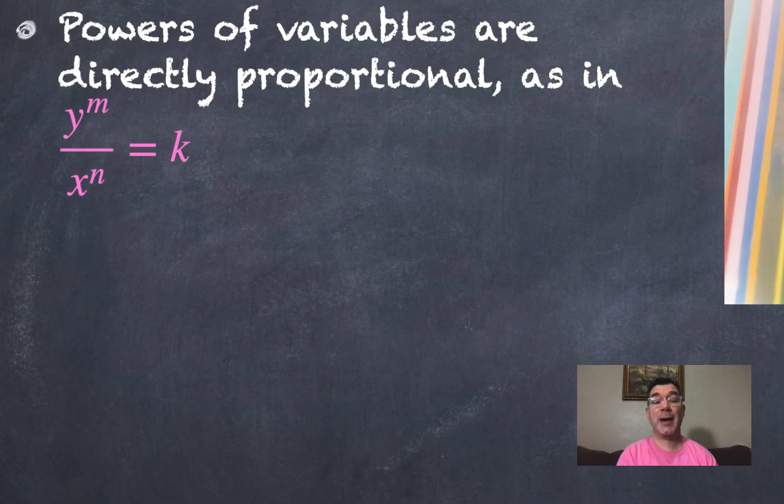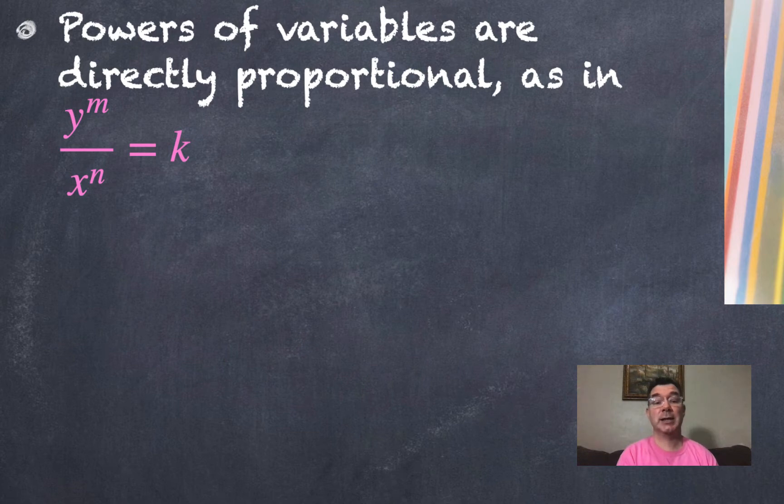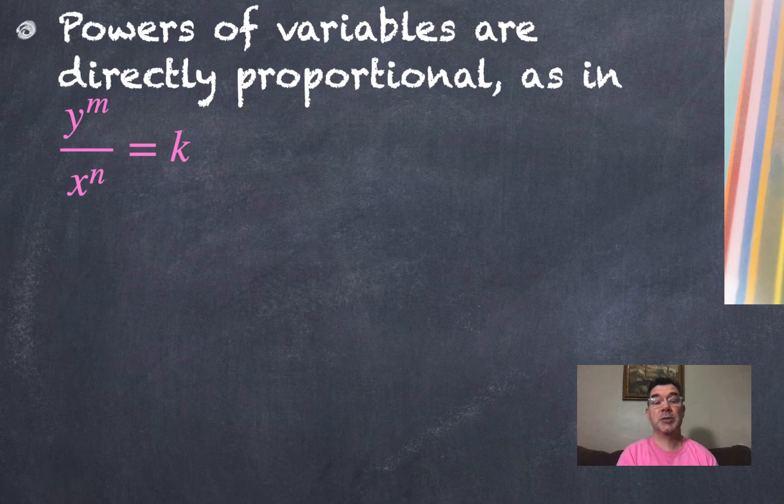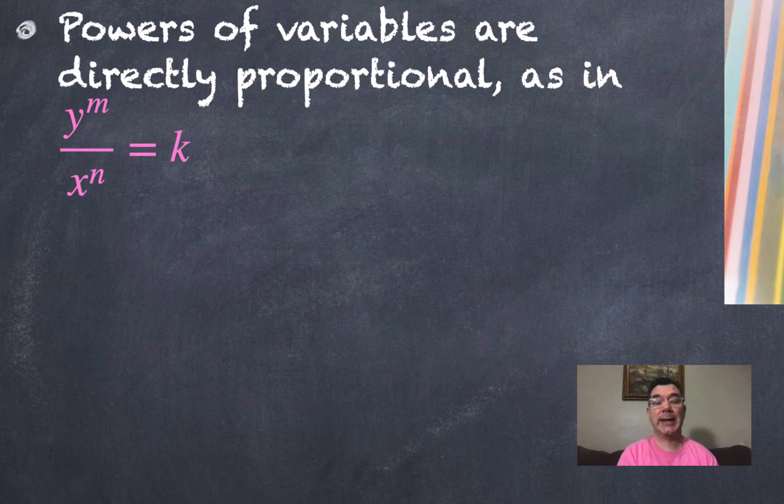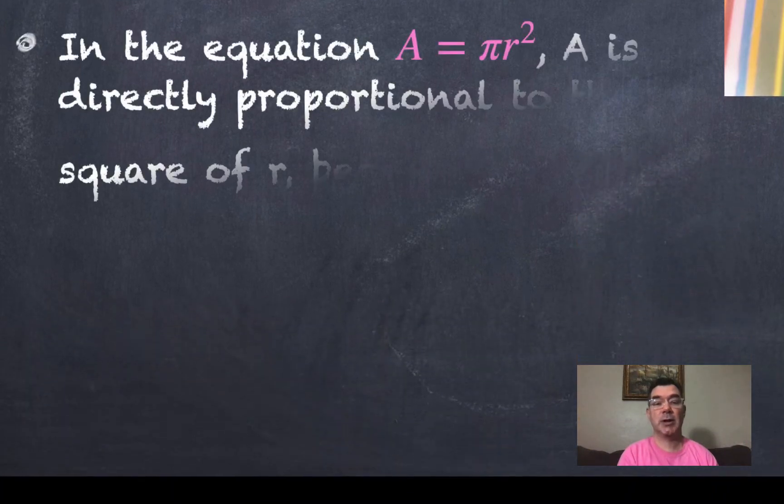Sometimes there are powers of variables that are directly proportional. So y could be raised to some exponent m, x could be raised to a different exponent or the same exponent, but just in case we'll call it n, and when I divide those I get that constant of proportionality which we call k every time. For every x and y, m and n are also constants. Those exponents are constants.